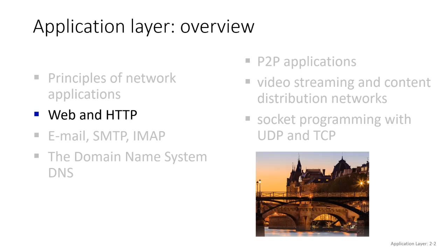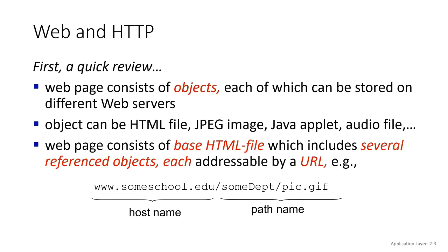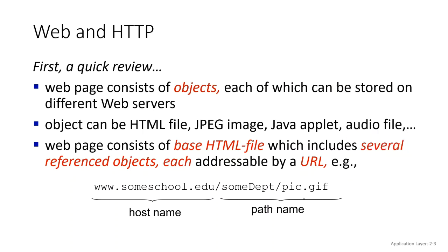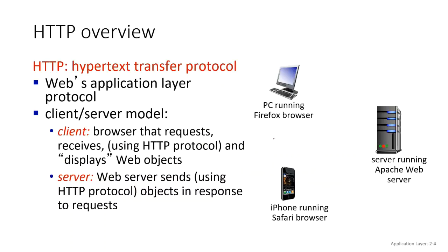When you want to go to the web and access a web page, you have to write your request in a specific manner. You have your hostname, which is basically your website, and then you have your object — in this case a GIF image, but it can be an MP3, a picture, a Word document, an Excel document, whatever.